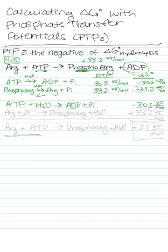Now we're reversing the other reaction. So we're going to have arginine and phosphate make phospho-arginine and water. And we'll have to switch the sign of delta G, so that one is going to be positive 33.2 kilojoules per mole.